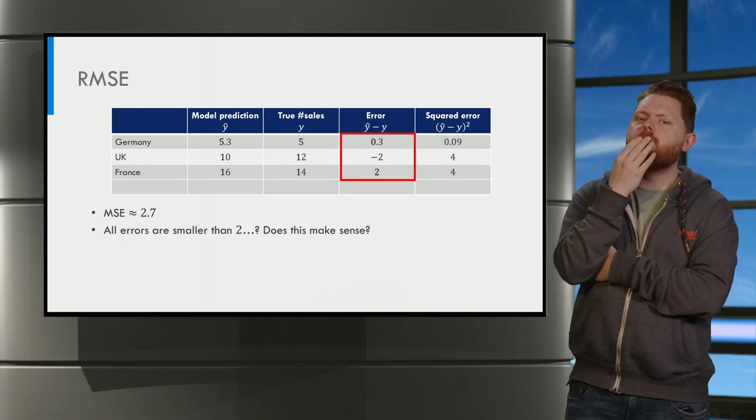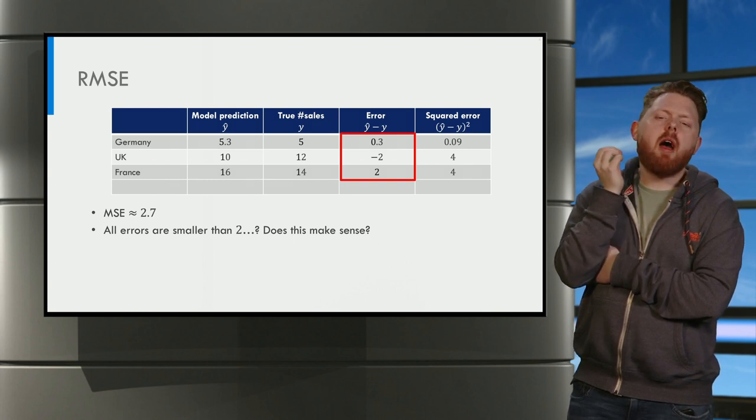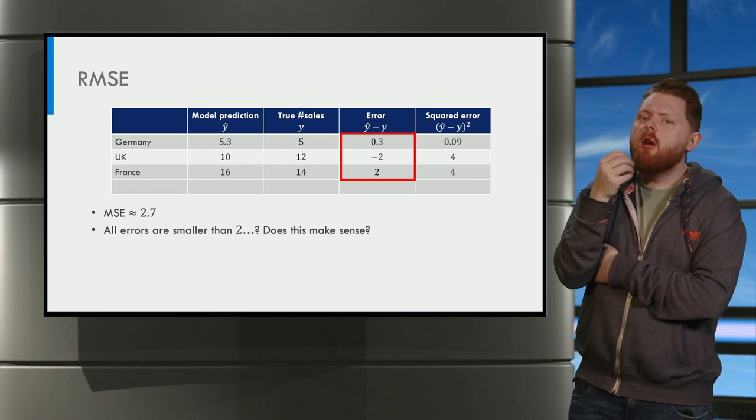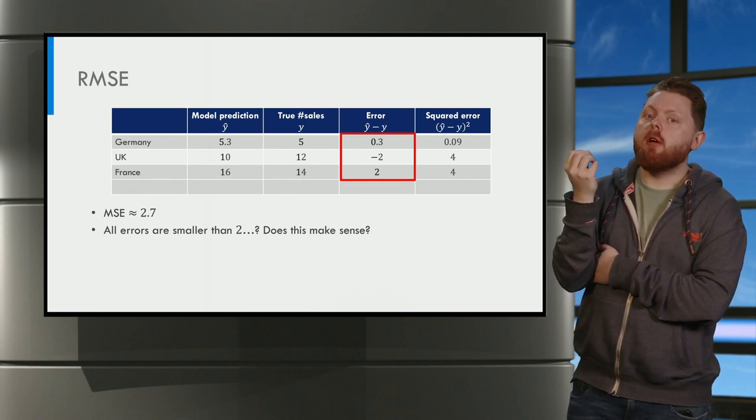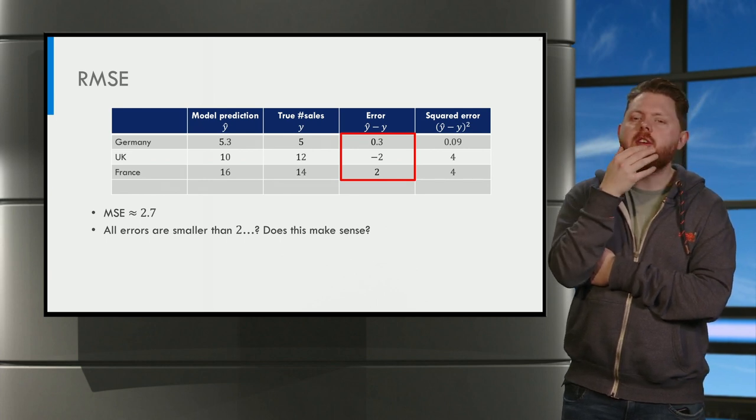But isn't this result also a bit strange? We arrived at an error of approximately 2.7, but all our errors are less than 2. So does this make any sense?